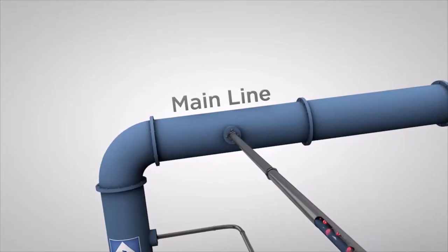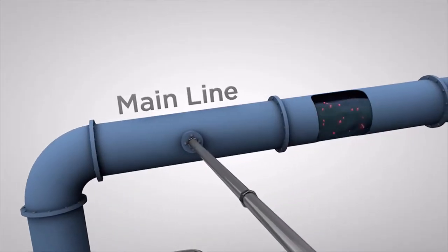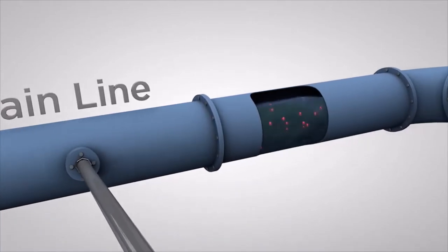Then, normal system water flow carries the balls through the inlet pipe and into the main line.